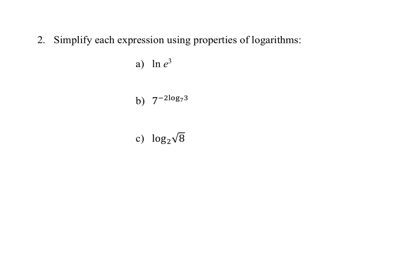Question 2 asks us to evaluate expressions using properties of logarithms from section 4.1. Part A: natural log cancels base e, so the answer is 3. Part B: the negative 2 in front prevents the 7 and log base 7 from cancelling. Using the power property, we move negative 2 up as an exponent to get 7 raised to the log base 7 of 3 to the negative 2. The 7 and log base 7 cancel, leaving 3 to the negative 2, which equals 1 over 9.